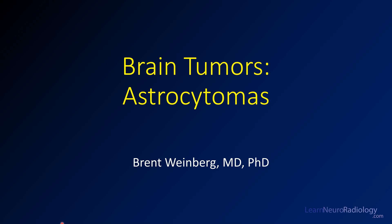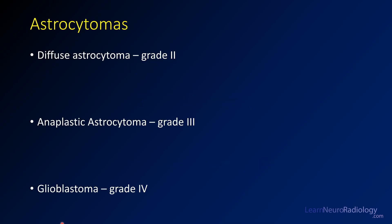Welcome back to Learn Neuroradiology. In this video, we're going to be talking about astrocytomas. Astrocytomas can be divided by three grades: the diffuse low-grade astrocytomas, which are grade 2 by WHO; the slightly higher-grade anaplastic astrocytomas, which have more aggressive histologic and imaging features; and then glioblastomas, which are the grade 4 astrocytomas.